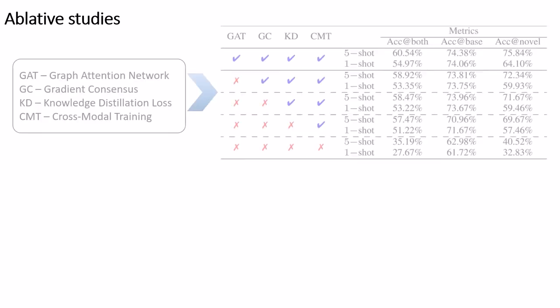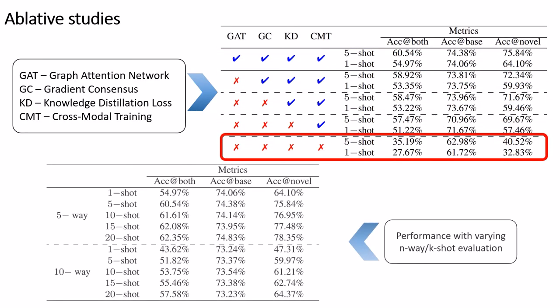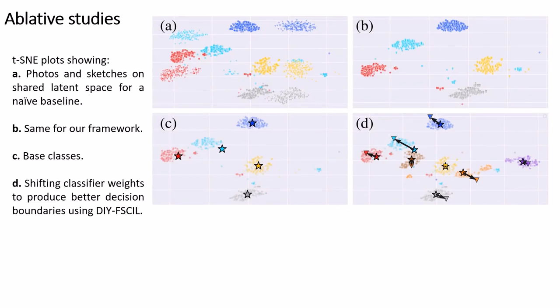As an ablative study we conduct a series of stripped down experiments of our design as shown. We also vary the number of shots and ways to see how number of classes and samples affect the overall performance. As evident from the TSNE plots showing classifier weights in a low dimension space, GATT refines weights efficiently to push the classifier weights away from the uncertain areas, resulting in better decision boundary.